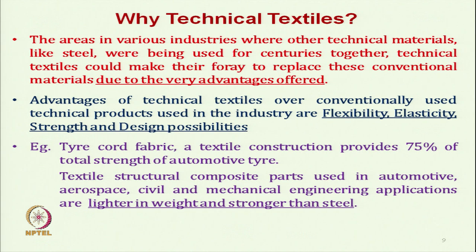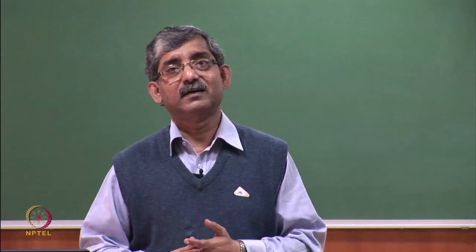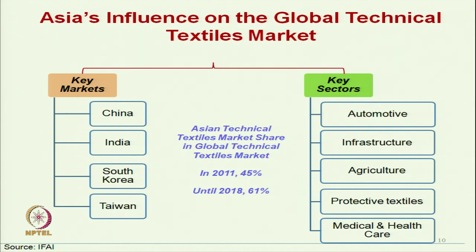If we see Asia's influence on the global technical textile market, there are basically four main players: China, India, South Korea, and Taiwan. The main sectors are automotive, infrastructure, agriculture, protective textiles, and medical and healthcare textiles. These are the major sectors, and many other sectors are also coming up.